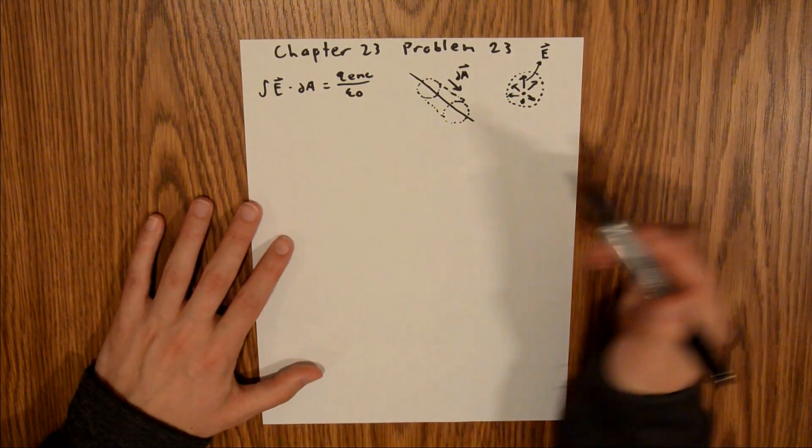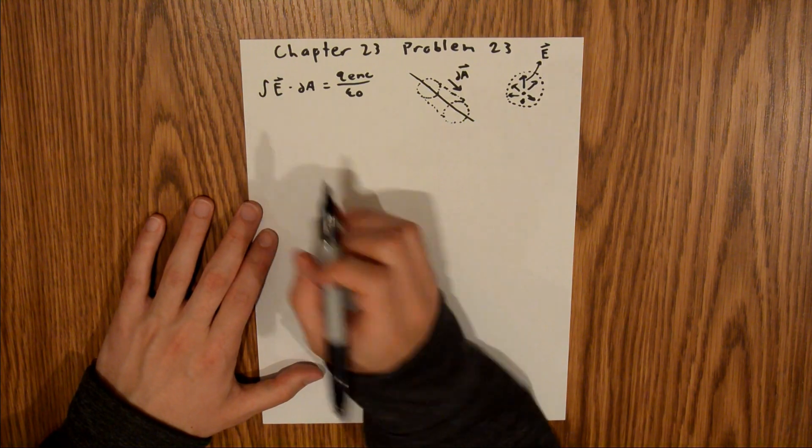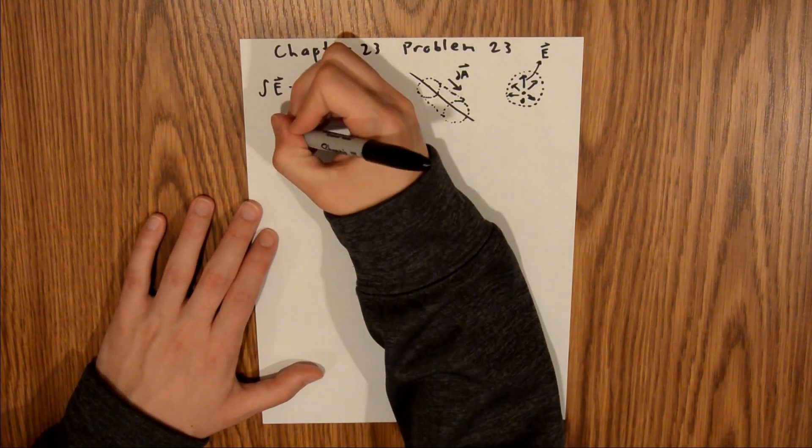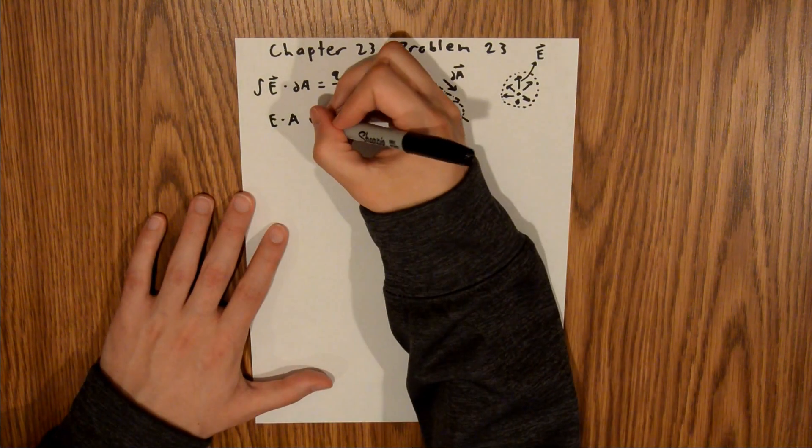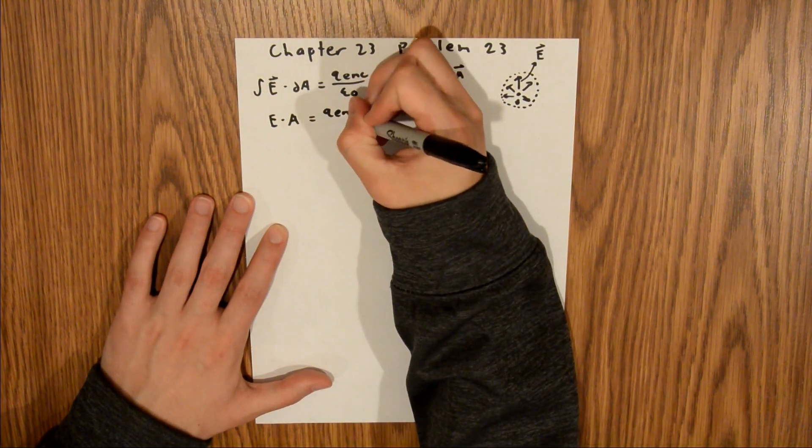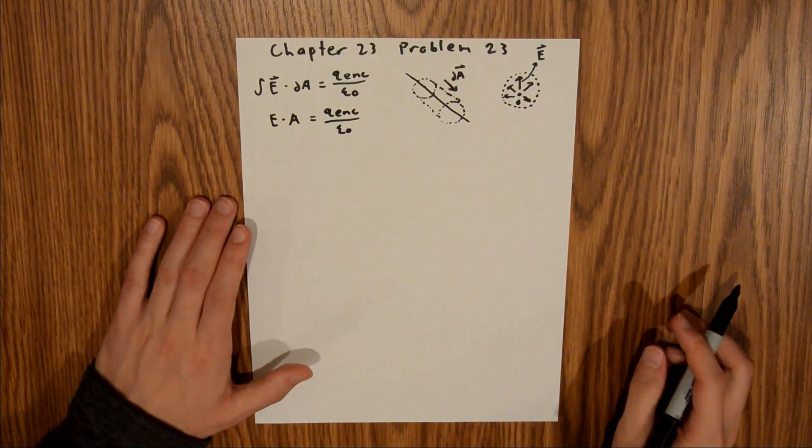and your electric field is perpendicular in every direction to that line of charge. And so since that's the case, your integral of E dot DA simplifies to E dot A, which is still equal to your charge enclosed over epsilon sub zero.